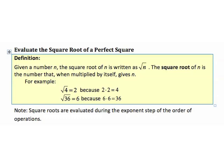Evaluate the square root of a perfect square. Start with a definition. Given a number n, the square root of n is written as the square root of n. The square root of n is the number that, when multiplied by itself, gives n. For example, the square root of 4 is 2, because 2 times 2 gives 4. The square root of 36 is 6, because 6 times 6 is 36. The square roots we'll look at here are all perfect squares, meaning when we take the square root of a number, it works out to be a nice whole number.